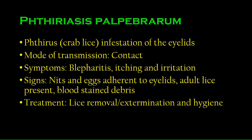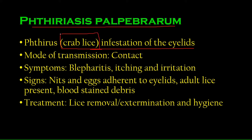Phthiriasis palpebrarum, in simple words, is an infestation of the eyelids by the insect called crab lice. This insect is quite notorious — it lives in hair, specifically known to live in pubic hair. In phthiriasis palpebrarum, they tend to live among the eyelashes, infesting the eyelids, because lice love hair as we all know.